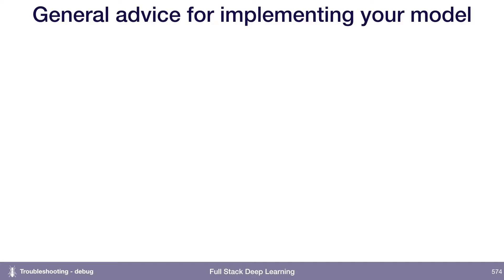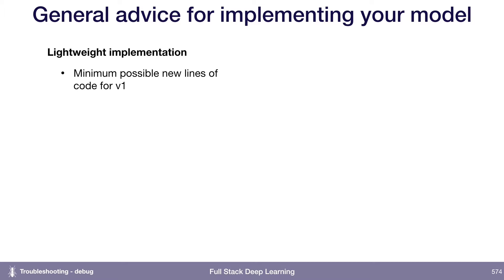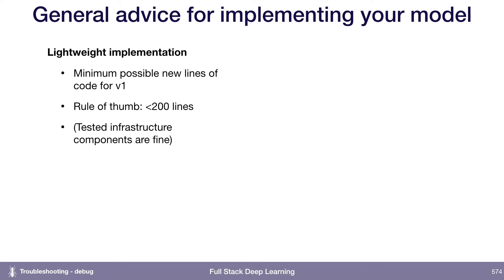A few pieces of general advice for implementing your model. First, I typically try to start with a very lightweight implementation — the minimum possible new lines of code for the first version. A rule of thumb I try to follow is to have less than 200 lines of code for the first version of the model. This doesn't count tested infrastructure components or TensorFlow itself. I wonder if you could even do automatic differentiation with 200 lines of code — I bet you could.